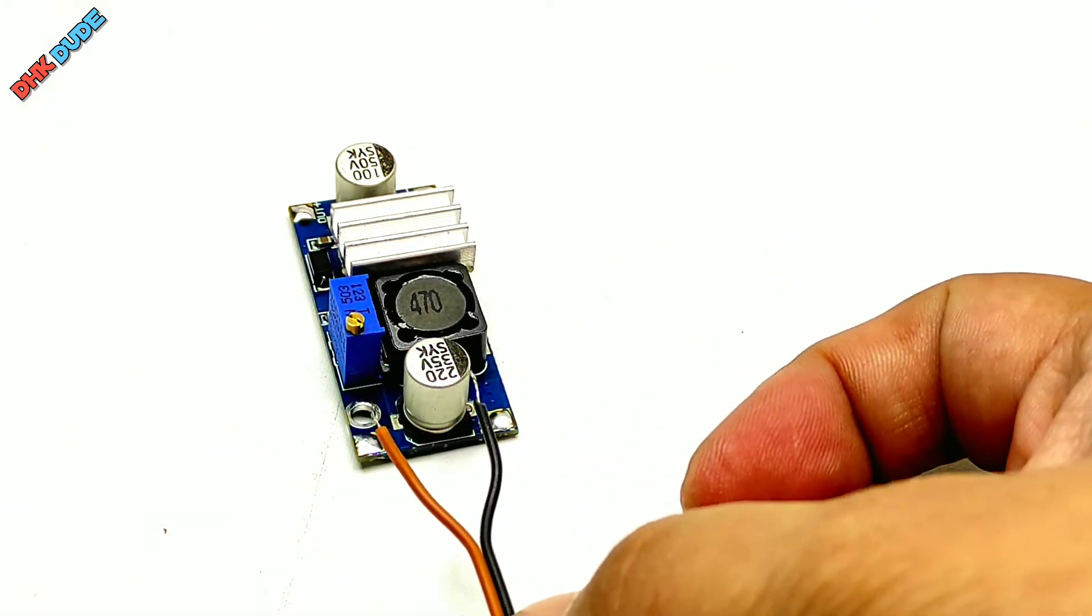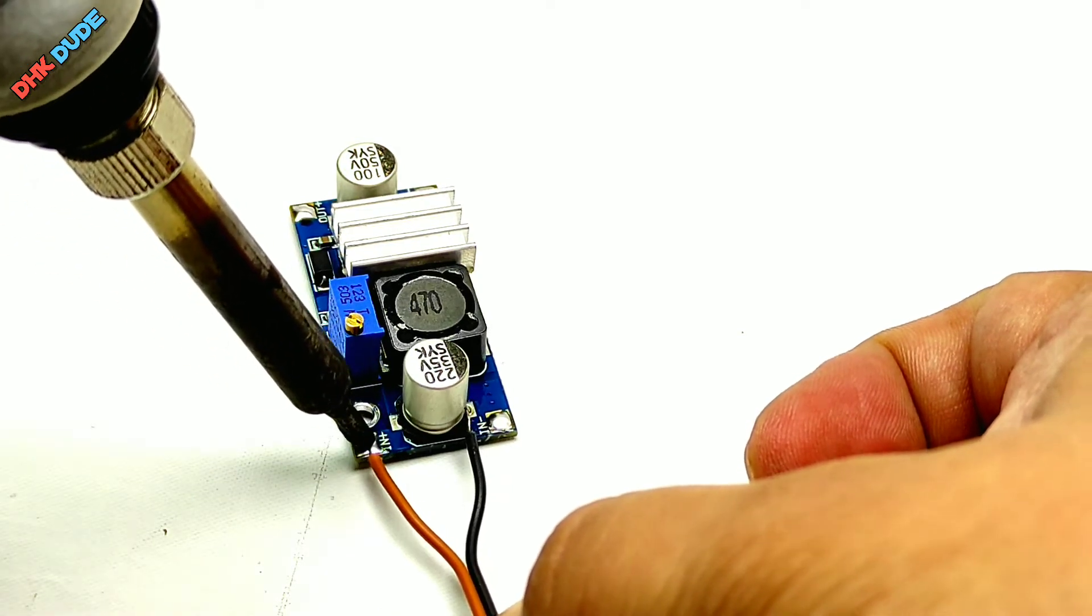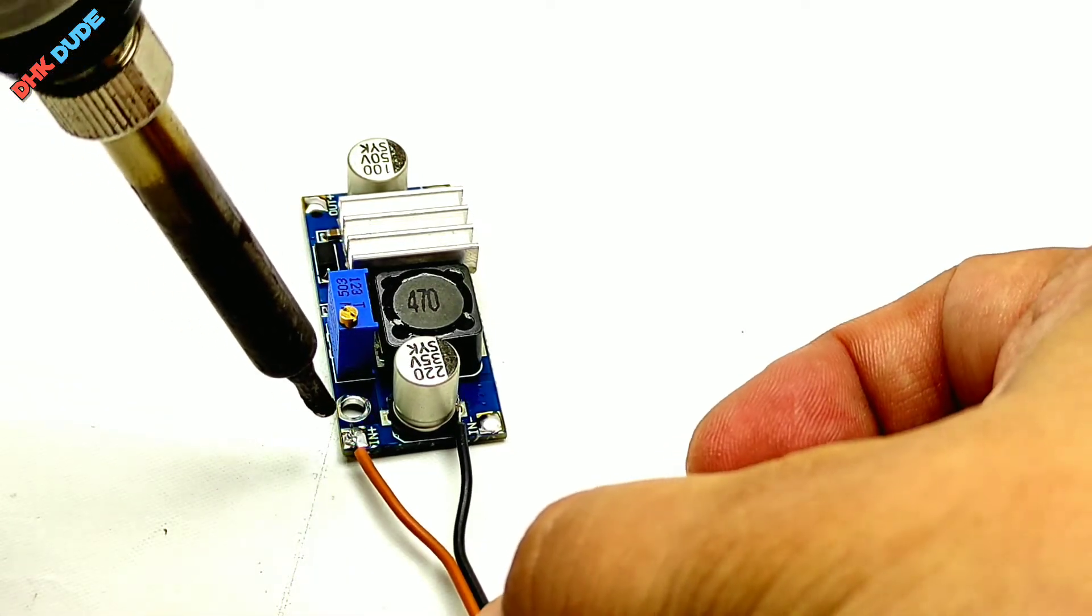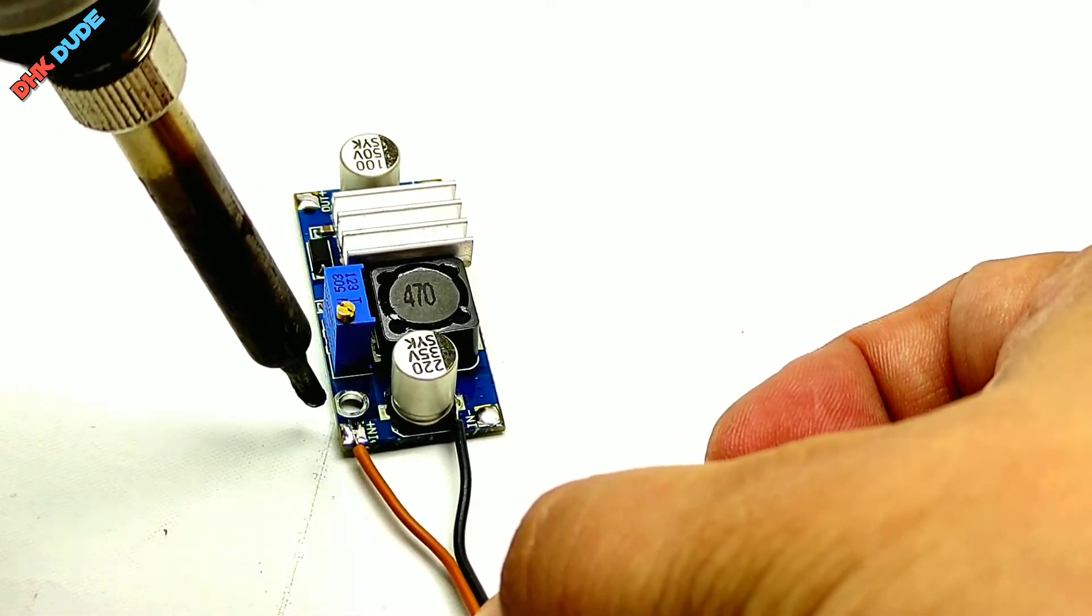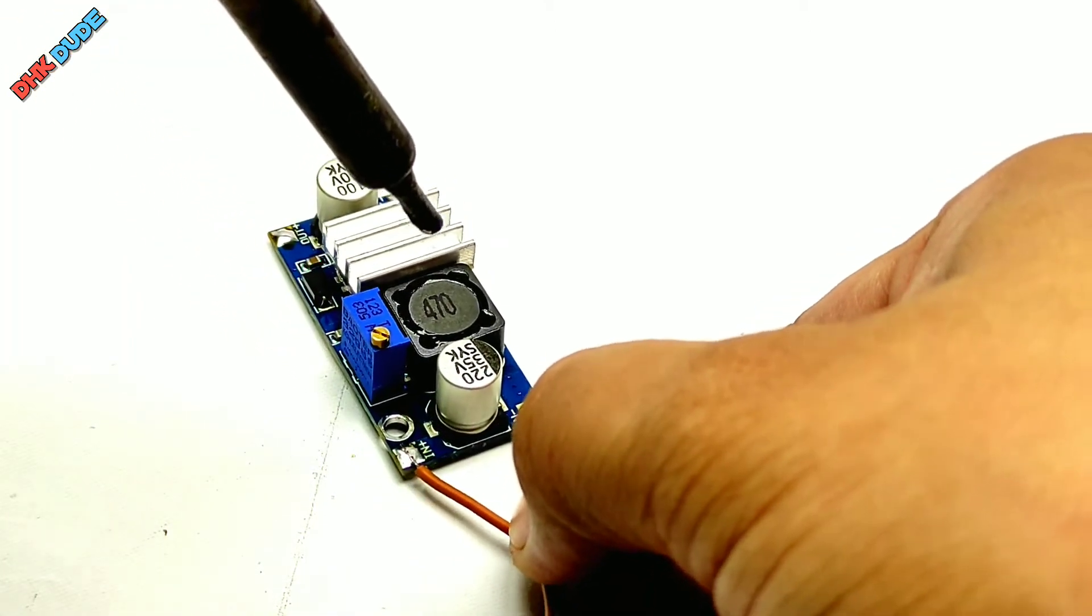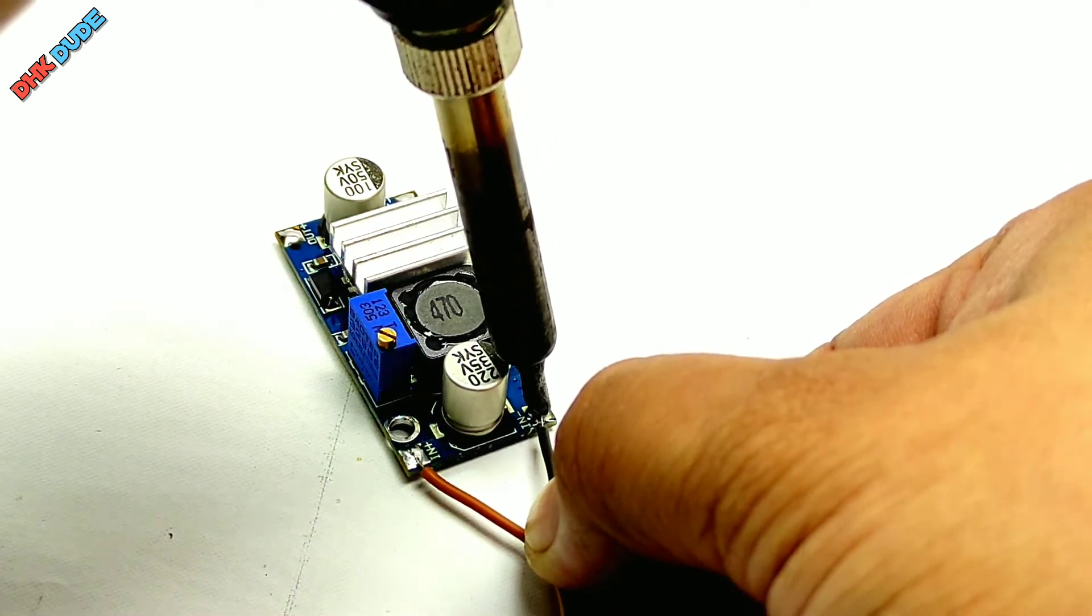To avoid confusion and wrong connections, take wires of two different colors like red, black or brown, black and solder them as shown in this video. Brown wire which is positive terminal needs to solder on the IN+ pad of the module, while black which is negative terminal needs to solder on the IN- pad of the module.